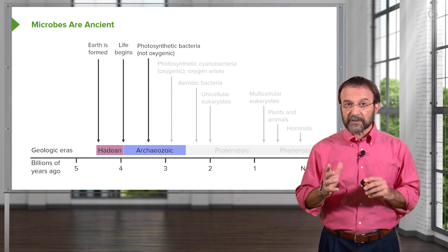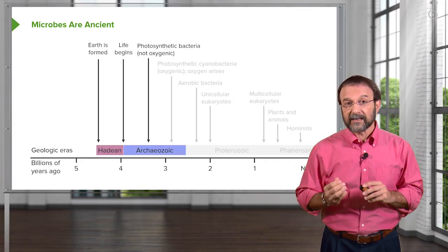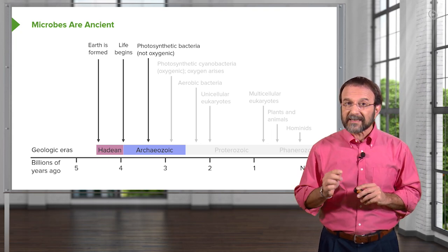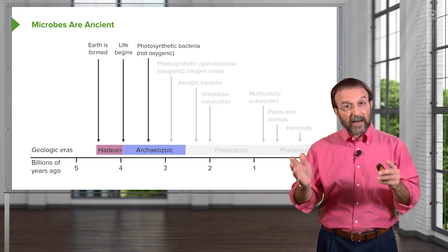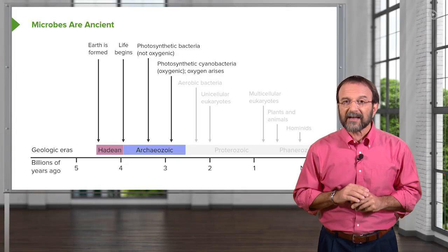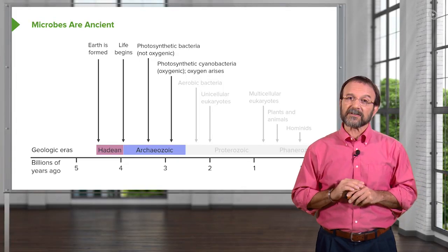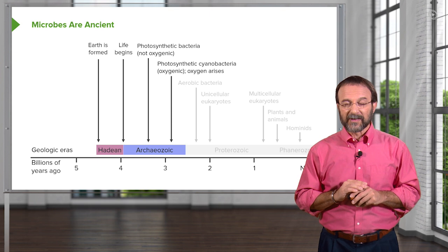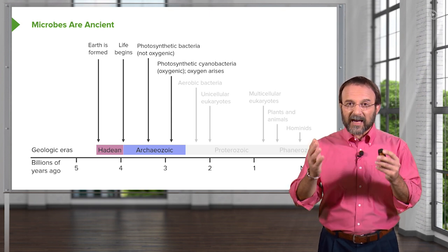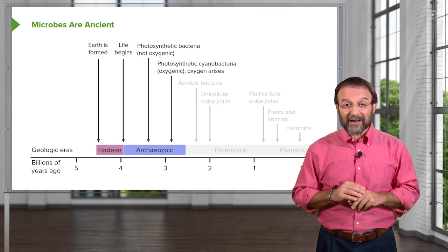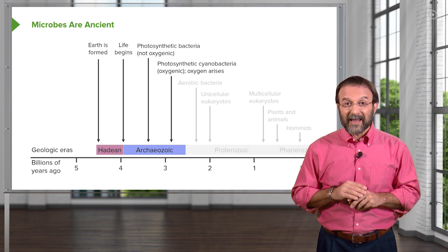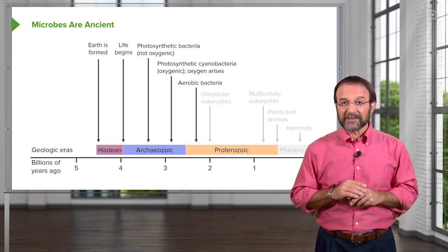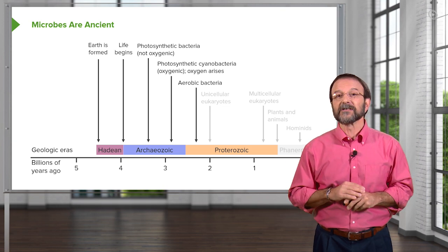These were photosynthetic bacteria that could take sunlight and make energy from it, but they were not oxygenic — they didn't make oxygen, so up to that point there was no oxygen on Earth. About two and a half to three billion years ago, the photosynthetic cyanobacteria emerged. These were oxygenic — they actually produced the first oxygen on Earth. Because of that, about two and a quarter billion years ago, the aerobic bacteria arose: those are the bacteria that can use oxygen to grow.